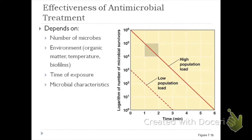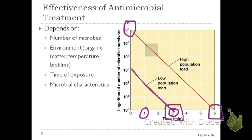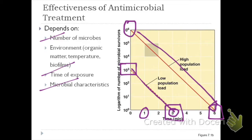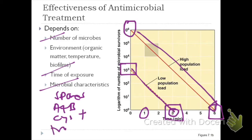Time of exposure is another factor — the longer the time of exposure, the more effective the antimicrobial agents. Looking at a graph, at 3 minutes there would be fewer organisms than at 1 minute. It took longer to achieve complete elimination when the initial number of microorganisms was higher. Microbial characteristics also matter: does it have spores? Is it AFB? Is it a cyst or trophozoite? Is it naked or enveloped? Those characteristics factor into the resistance level.